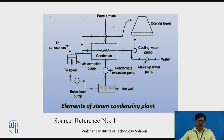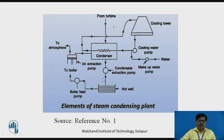The condenser is a closed vessel in which the exhaust steam from the turbine or engine is admitted and condensed into liquid due to removal of latent heat. The steam gives its heat to the cooling water circulated through tubes in the condenser. As the steam gets condensed, the pressure inside the condenser is reduced to below atmospheric pressure — that is, we get a vacuum. This condensate is at a pressure below atmospheric pressure, so it will not come out of the condenser on its own. Therefore, we require an additional pump called the condensate extraction pump.